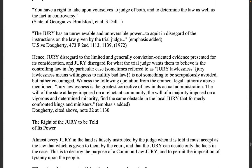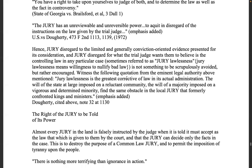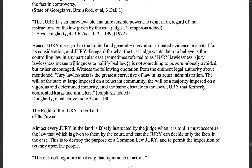The jury has an unreviewable and unrevisable power to acquit in disregard of the instructions on the law given by the trial judge — U.S. v. Doherty, 1972. Jury disregard for what the trial judge wants them to believe is the controlling law is sometimes referred to as jury lawlessness. Jury lawlessness means willingness to nullify bad law — it is not something to be scrupulously avoided but rather encouraged. We're under the common law and no man is bound to follow a statute he did not agree to — that's statutory or contract law, equity, admiralty law, all under contract.